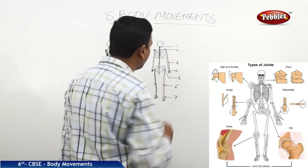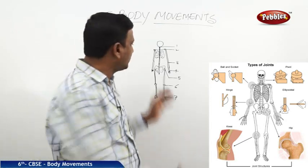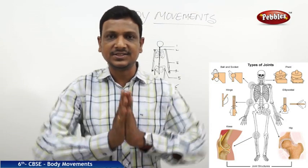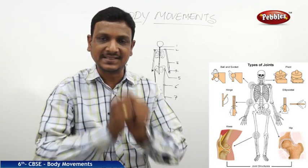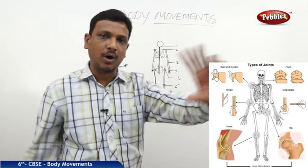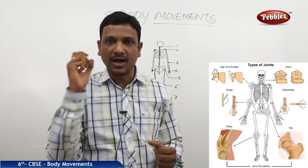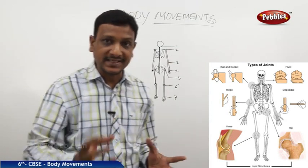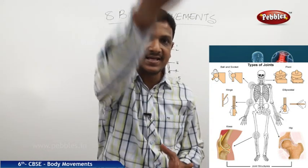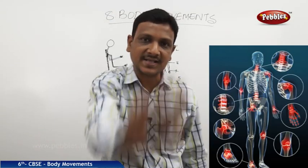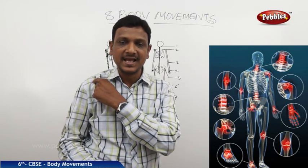Let us discuss each joint, their function, flexibility, and what kind of movement they allow. You can try some motions — just look at your body and see how much movement is allowed in each part. Feel like you are throwing a ball as a bowler in cricket. Observe the bowler: he takes the ball in his hand and rotates his hand completely — a 360-degree rotation at the shoulder joint. So that particular joint allows 360 degrees.